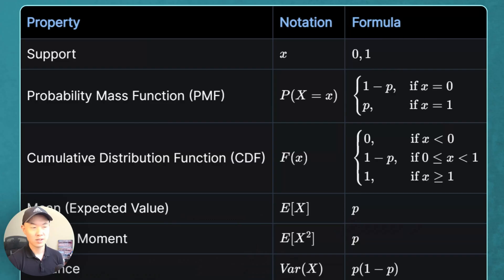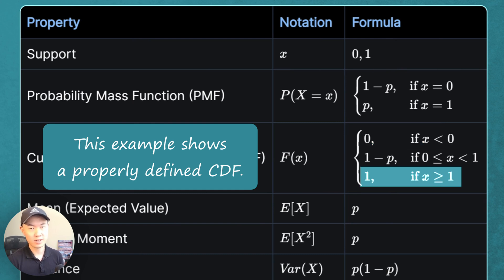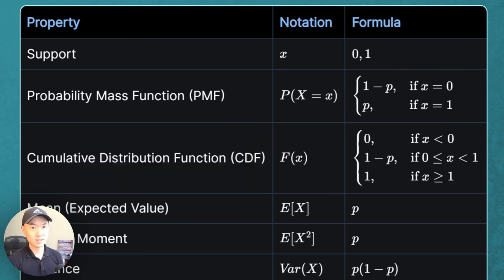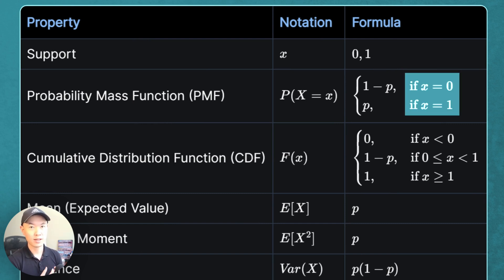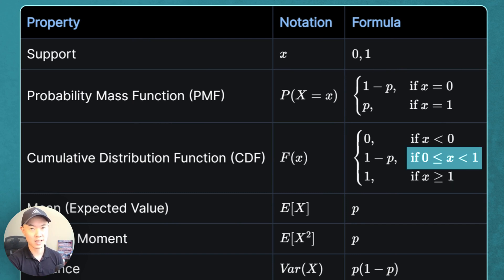In the tables, you might see a shorthand notation for the CDF. A properly defined CDF must be defined for all real values. With the shorthand notation, it's implied that the CDF is zero on the lower end and one on the upper end. Since the CDF must be defined for all real values, and real values are continuous, to get from a discrete PMF to a CDF defined for all real values, you have to define intervals for the values that x can take on.